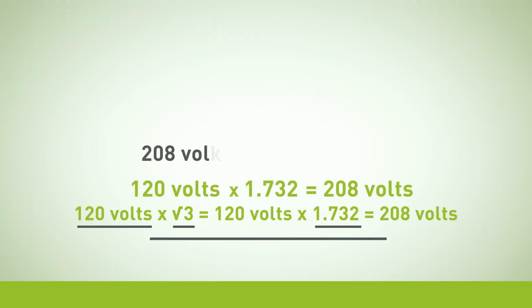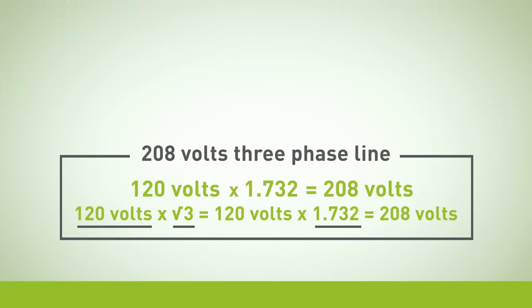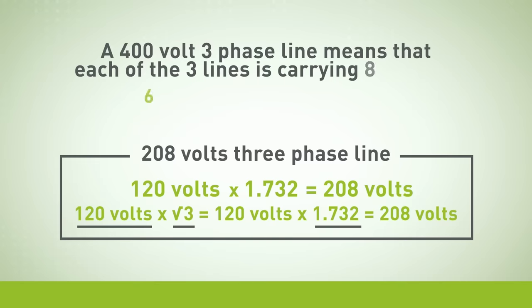That's why we call it a 208 volt three-phase circuit or a 208 volt three-phase line. A 400 volt three-phase circuit means that each of the three lines are carrying 230 volts.